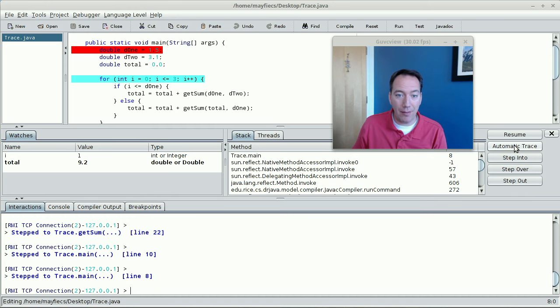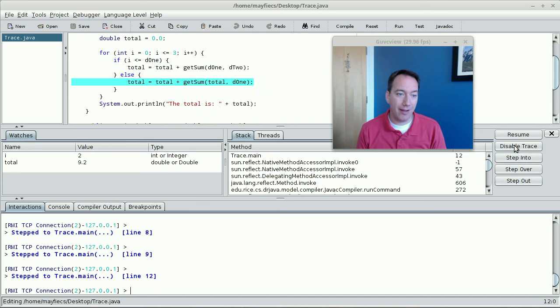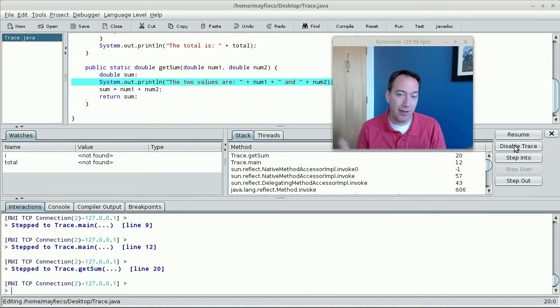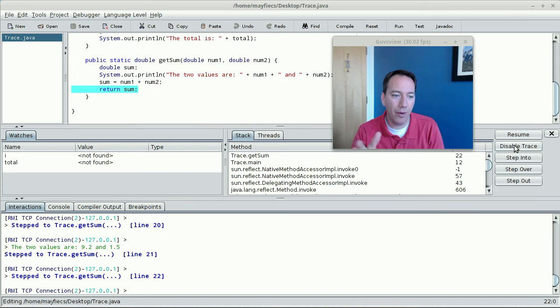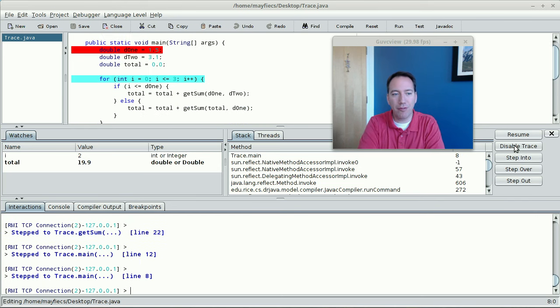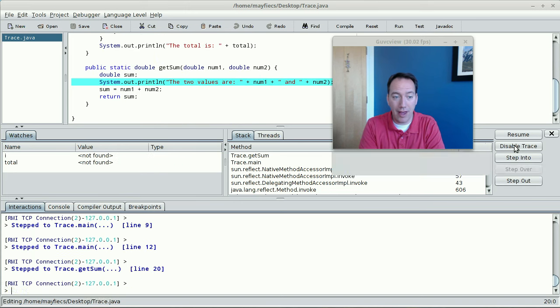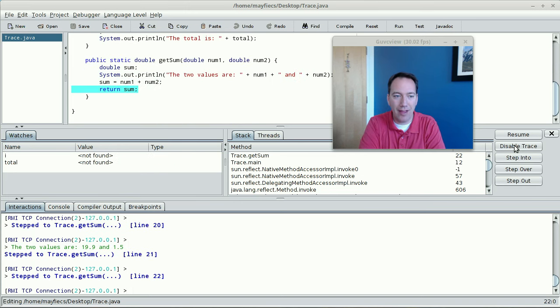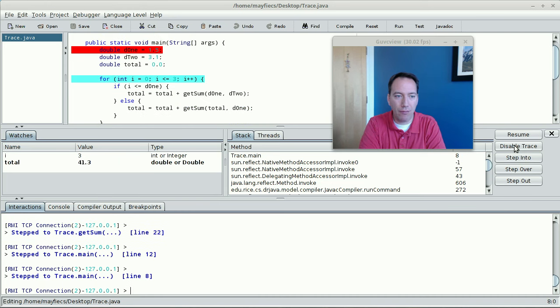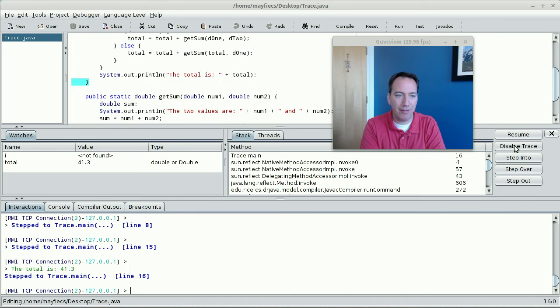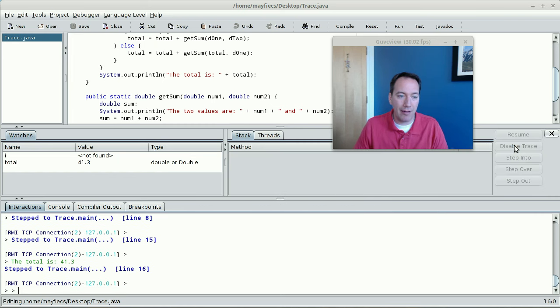You can also press the automatic trace button. And what that does basically is step into, step into, step into, with about a one second delay between each one. So at this point, you can just sit back and watch your program run one line at a time to understand the order of execution. So finally the for loop ends and it prints the final output statement and your program terminates.